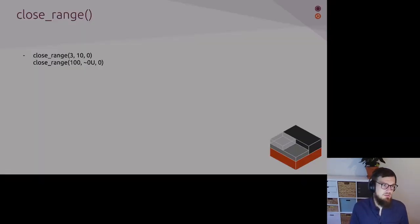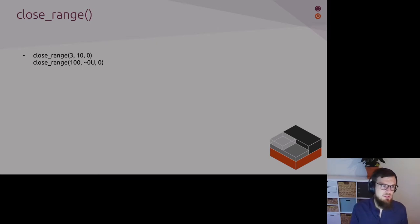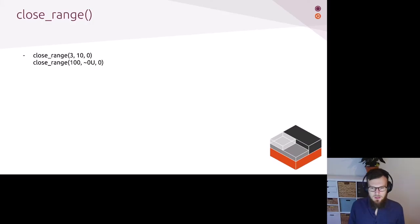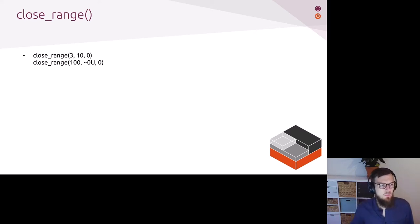Close_range is also designed to allow for some flexibility - callers can specify an upper bound. For example, you could have a first close_range syscall closing file descriptors from 3 to 10, then leave a gap for file descriptors you want to keep open, and then do a separate close_range syscall closing everything starting from 100 up to infinity. This is useful for scenarios where specific file descriptors are created with well-known numbers that are supposed to be excluded from getting closed - for example, systemd does this quite regularly.